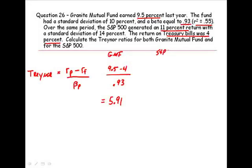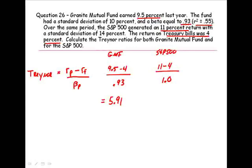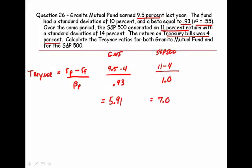Now for the S&P 500: the S&P 500 generated an 11% return, 4% is the risk-free rate. Since the S&P 500 is representing the market — it is our proxy for the market — we remember that the market has a beta of 1. This generates a Treynor equal to 7%. We can conclude that on a risk-adjusted basis, the S&P 500 outperformed Granite Mutual Fund.